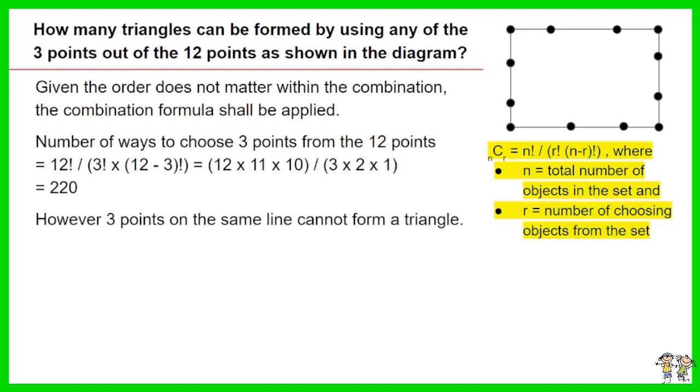However 3 points on the same line cannot form a triangle. The number of such 3 points for each line in the square equals 4 factorial divided by the outcome of 3 factorial. Work out the equation, it is equal to 4.